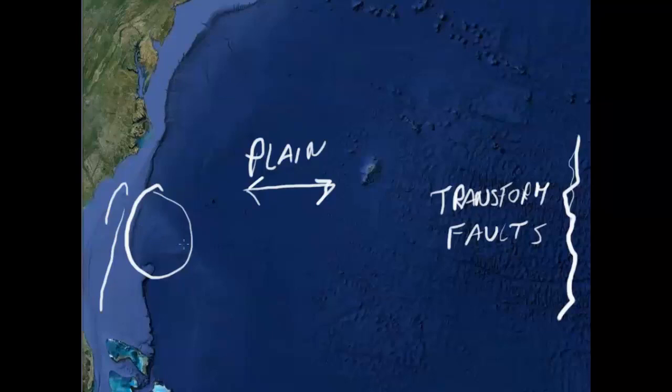Right in here is kind of a fan. This is material coming off the continental shelf and flowing down the slope into the continental rise or the abyssal plain. You can definitely see the slope right here.